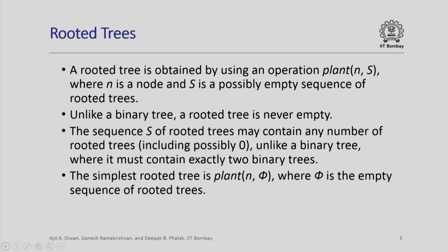Unlike a binary tree, a rooted tree is never empty — it will always have the root node together with a sequence of rooted trees. The sequence of rooted trees can contain any number of trees, possibly 0, whereas in a binary tree it always contains exactly two binary trees: one called the left and the other the right. The simplest rooted tree is plant(n, φ) where φ is the empty sequence of rooted trees.